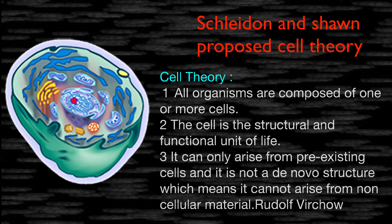Point number three was added by Rudolf Virchow, who stated that cells can only arise from pre-existing cells and it is not a de novo structure, meaning it cannot arise from non-cellular material. De novo is the concept that living things can arise from non-living material, but Rudolf Virchow explains that cells can only be formed from pre-existing living cells, not from non-living material.